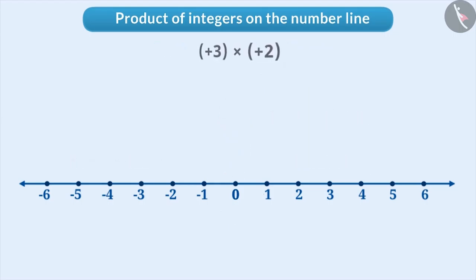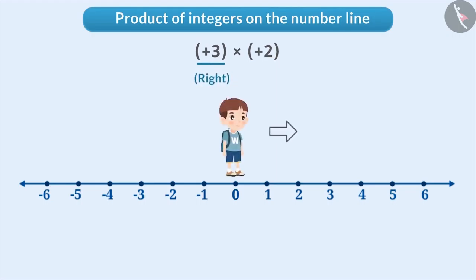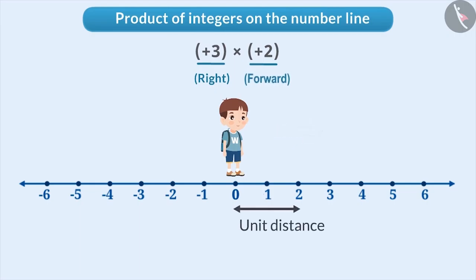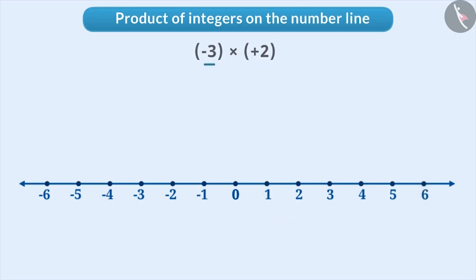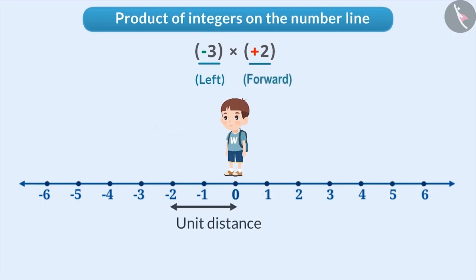In positive 3 into positive 2, the first number is positive, meaning the person is looking towards the right. Since the second number is also positive, he will take three steps of two unit distance in the forward direction. Therefore, the result of multiplication is positive 6. In minus 3 into plus 2, the first number is negative, meaning the person is looking towards the left. Since the second number is positive, he will take three steps of two unit distance in the forward direction. Therefore, the result of the multiplication is negative 6.